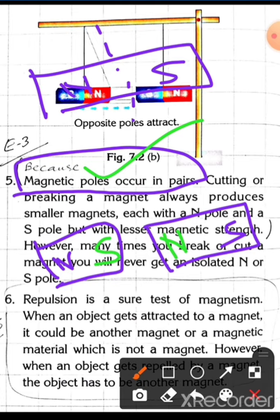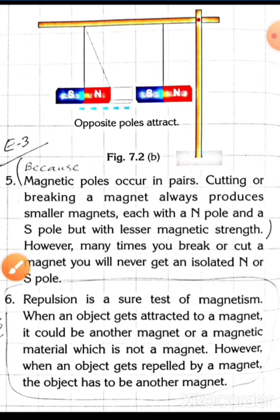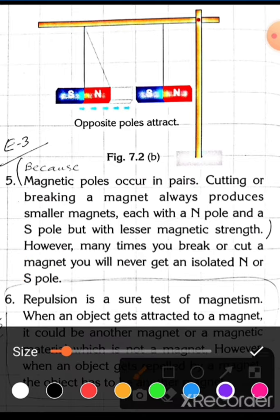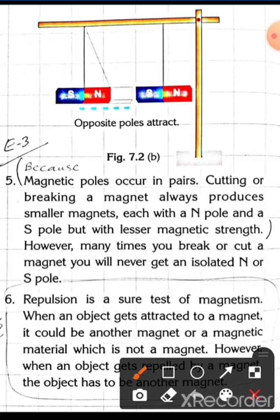No monopole exists. A single isolated pole cannot exist on its own. Whenever a magnet is formed, it will always have two poles — a pair. Repulsion is a sure test of magnetism.